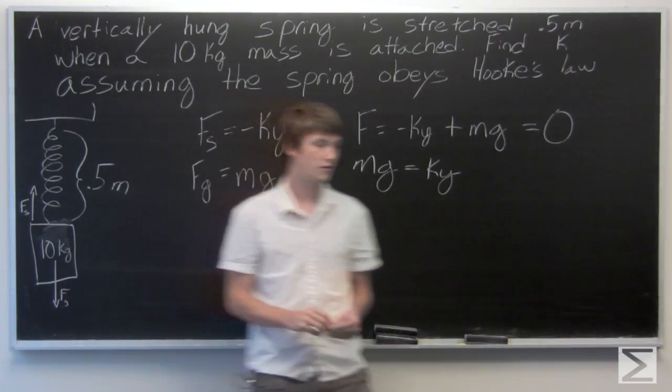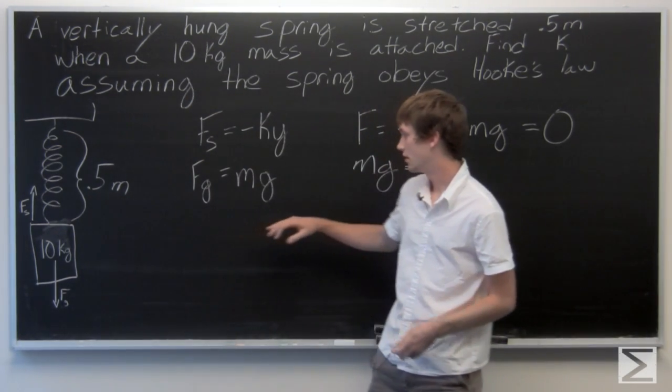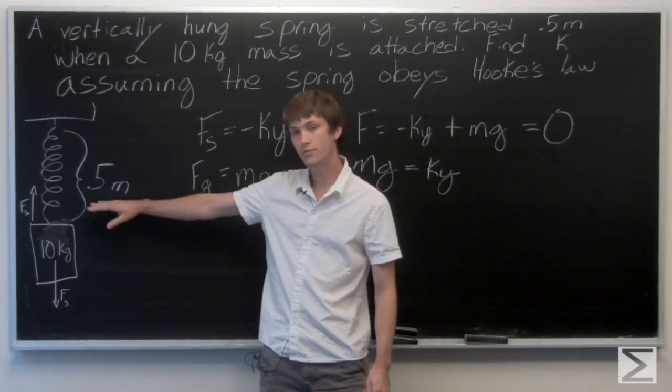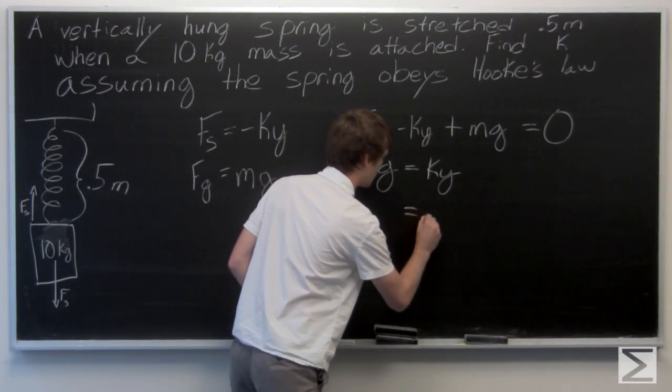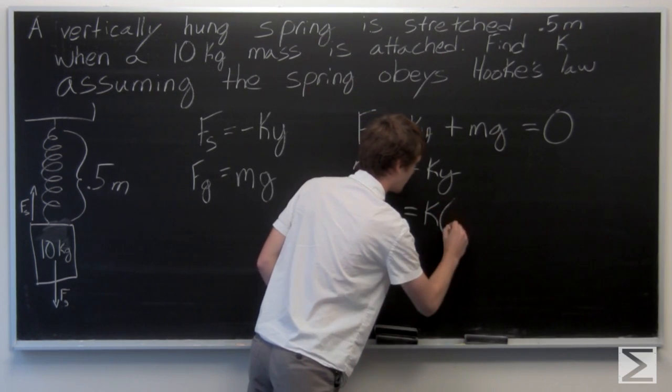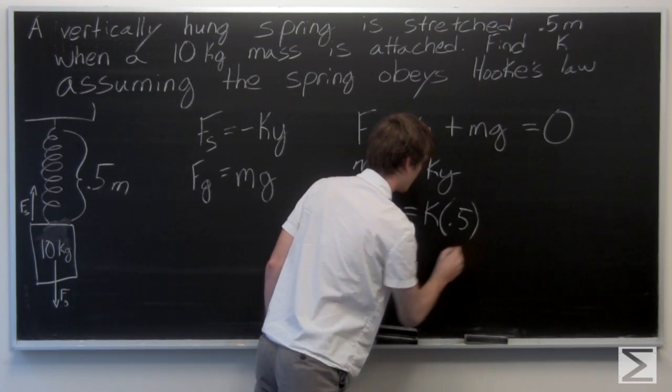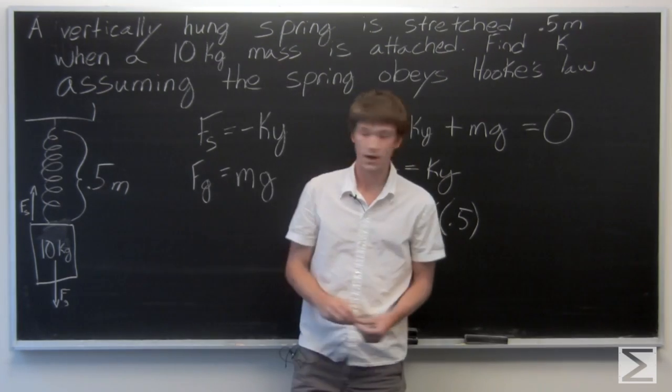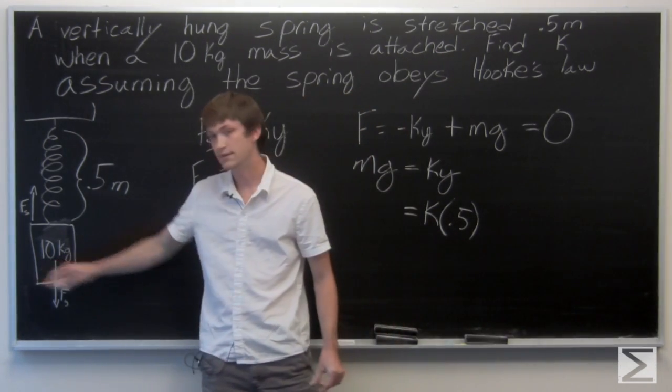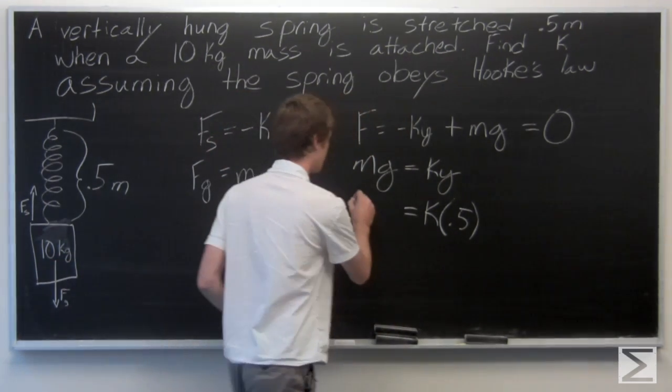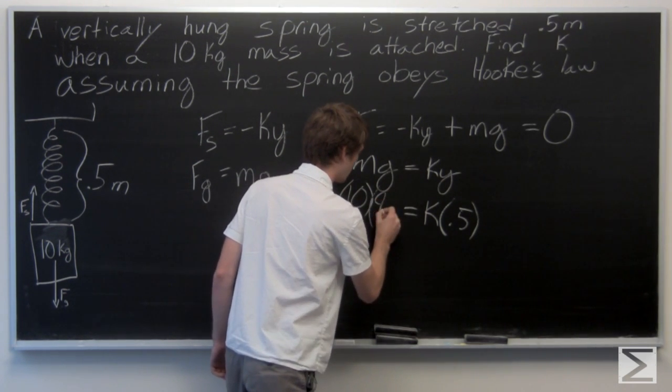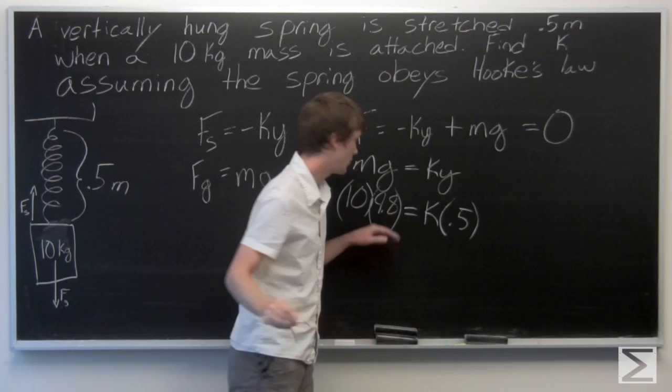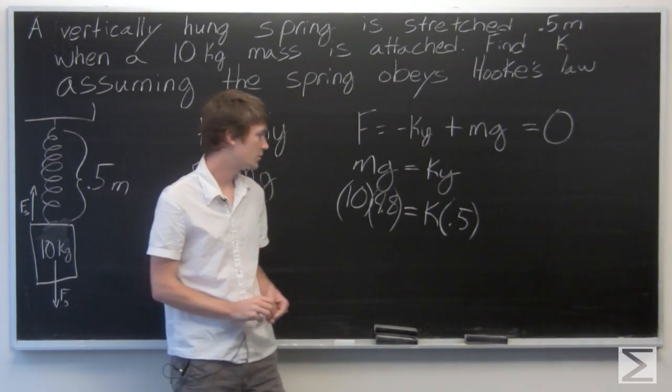So we can plug in our values from the problem. We're given that y is 0.5 meters, and we're given that the mass is 10 kilograms, and we know that gravity is 9.8 meters per second squared.